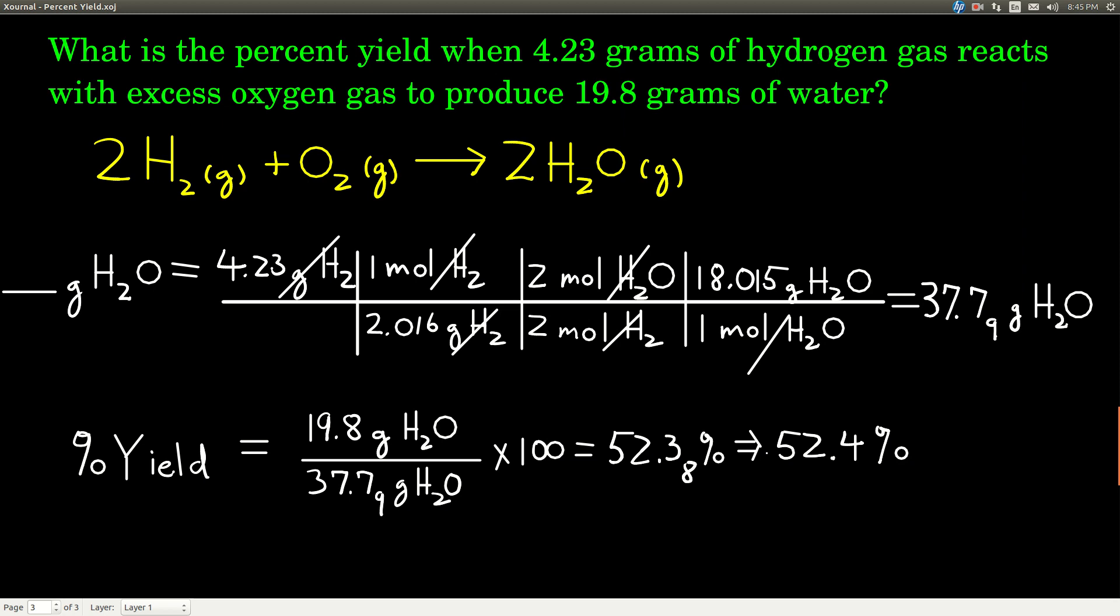And so, we see that our percent yield for this reaction is 52.4%. In other words, we made 52.4% of the amount of water that we could have made if everything went perfectly and we'd gotten 100% yield.